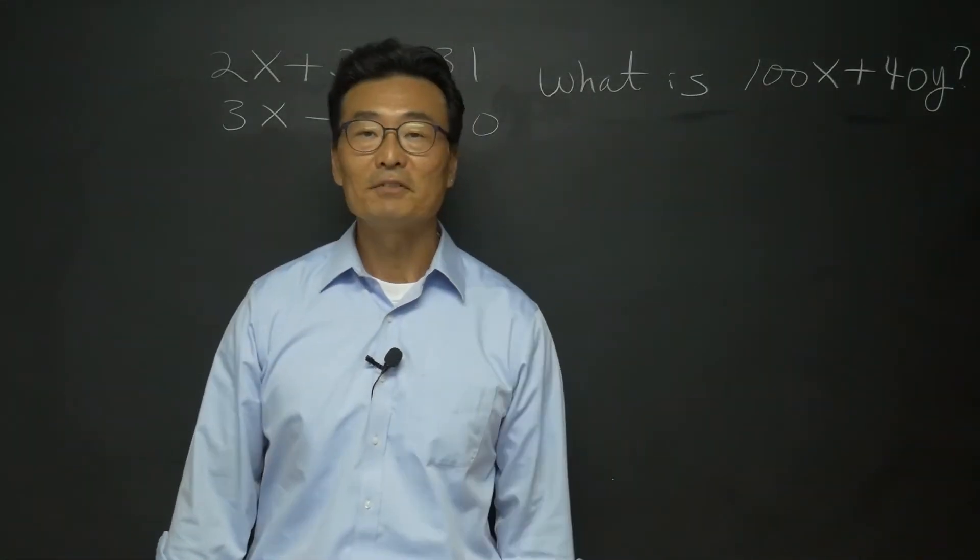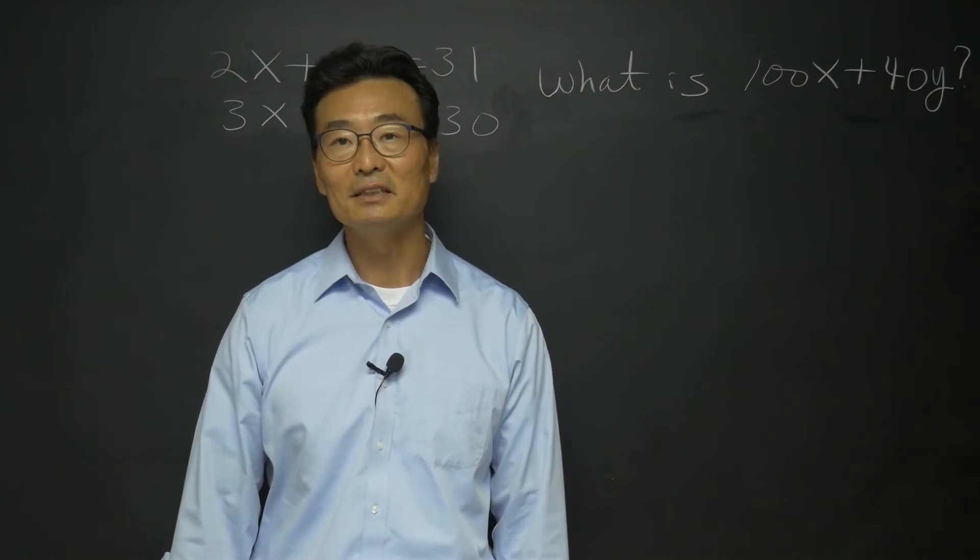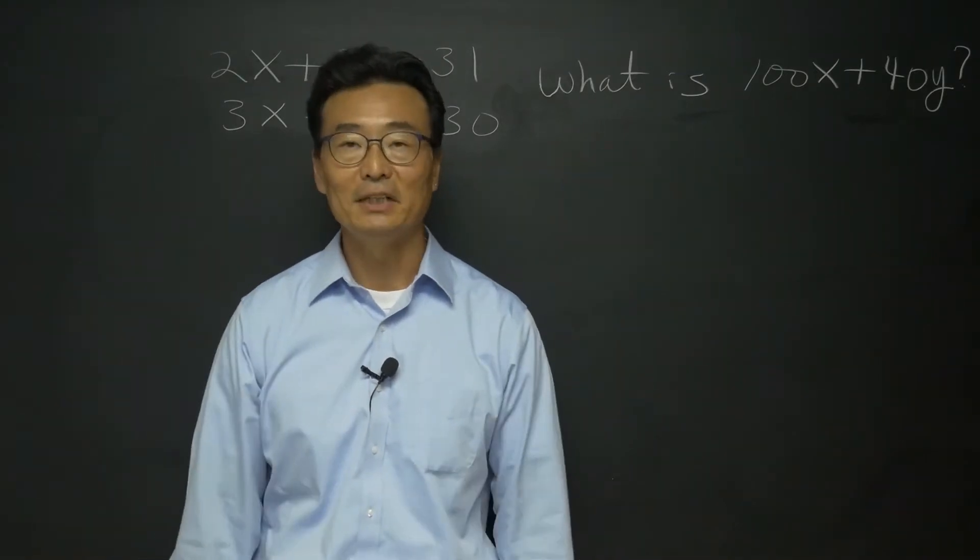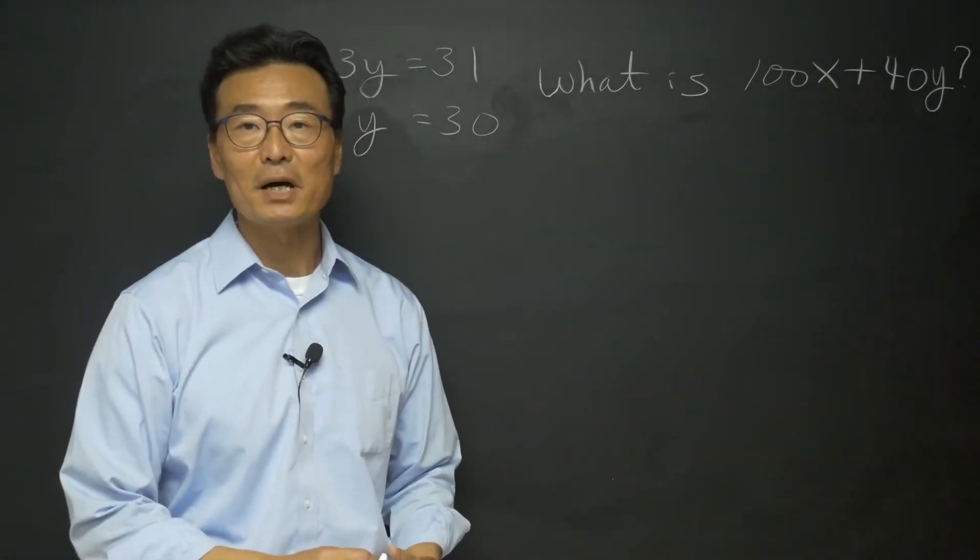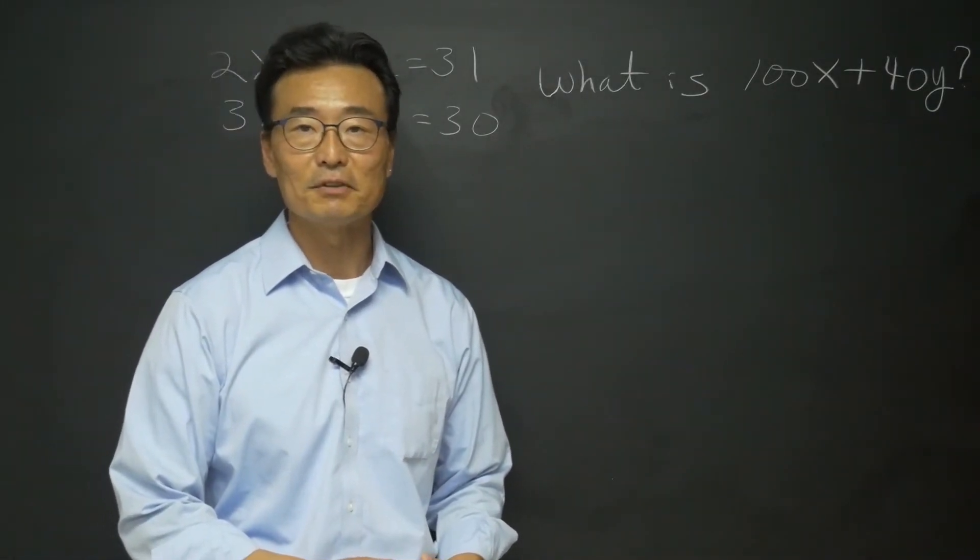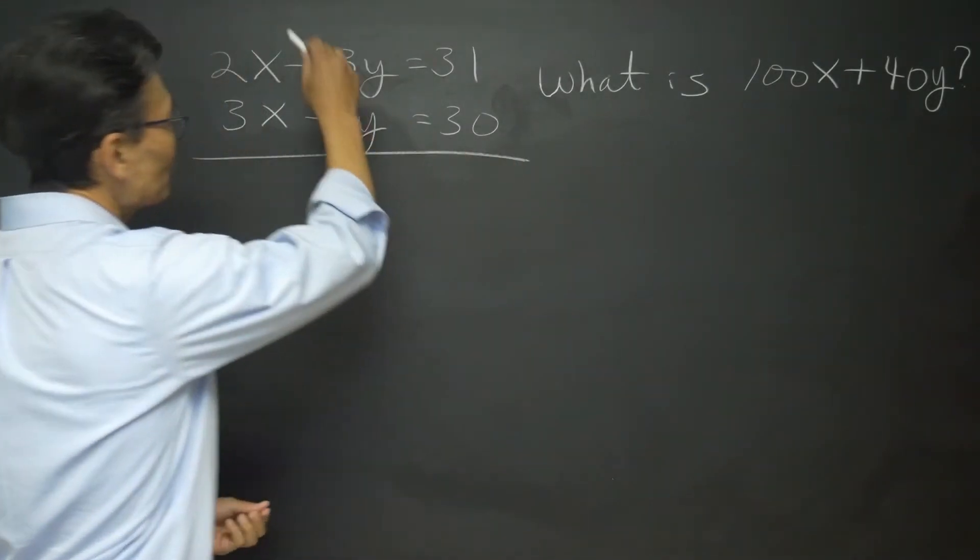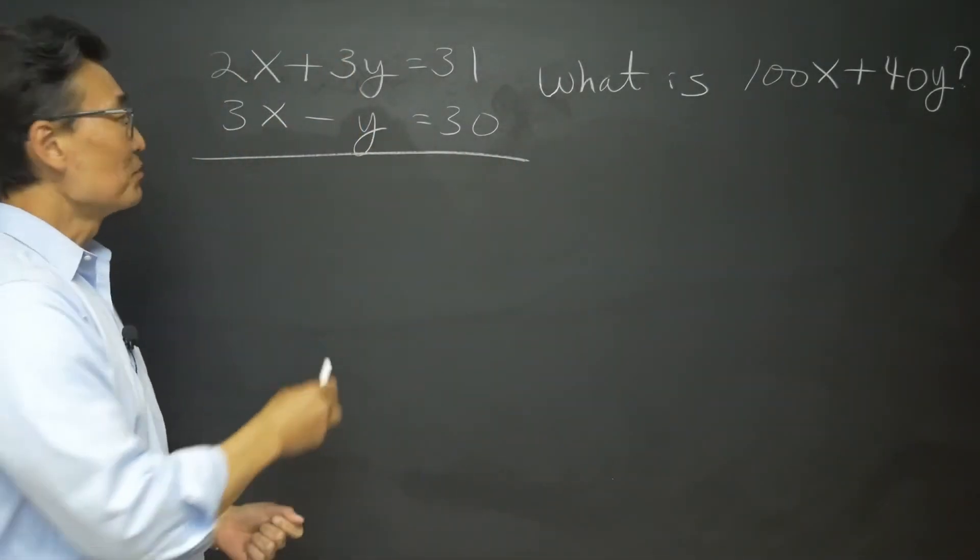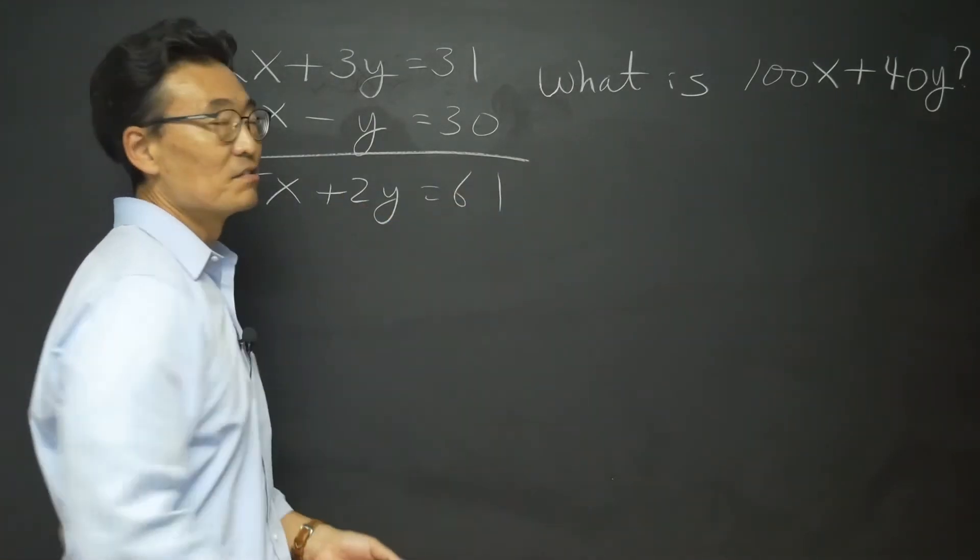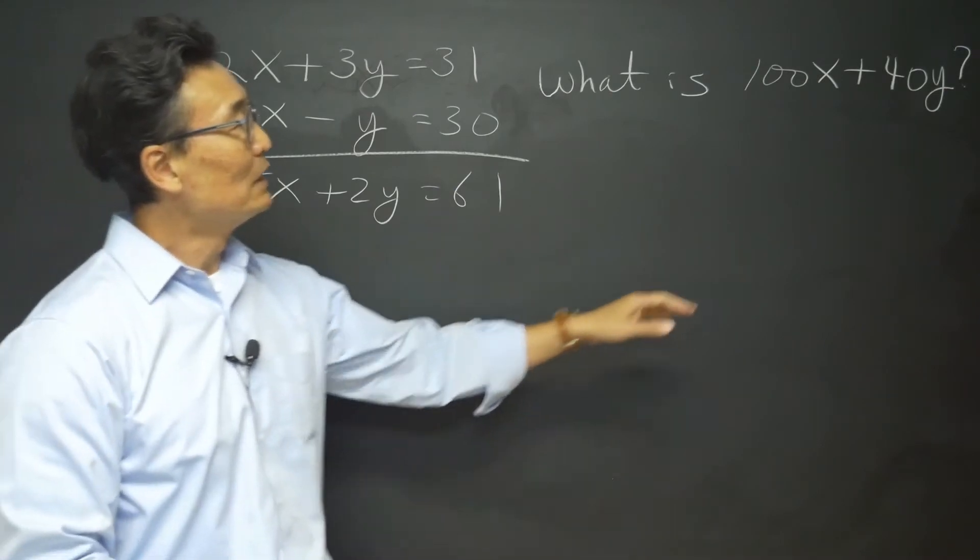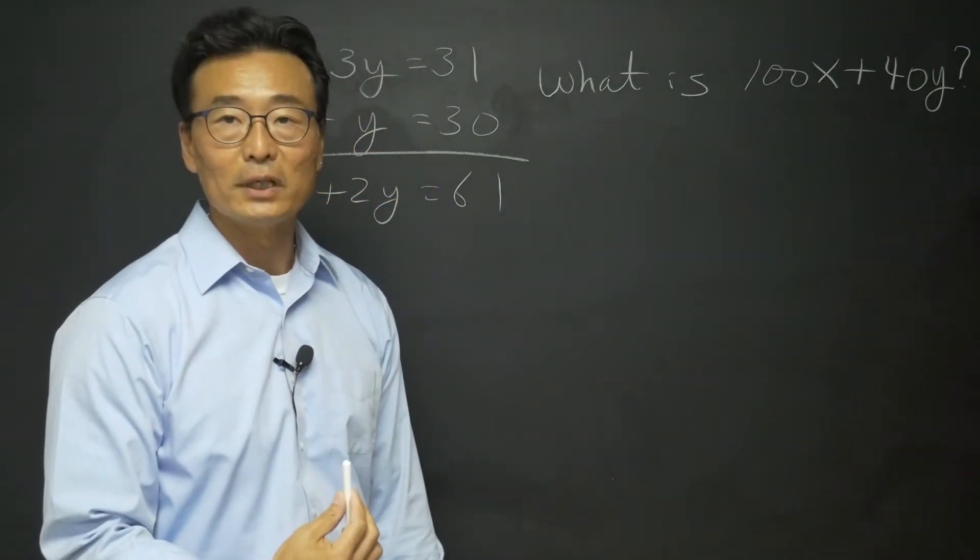So let me erase this and show you the SAT method to get the question done much quicker. All right, here we have the same question. This time I'm going to be doing it the SAT way, meaning the quicker way to get the question done as quickly as possible and save us some time. First of all, I'm just going to go ahead and add up and down. Let's see what happens. We get 5x plus 2y is 61. Also, from the 100x plus 40y, let's go and take out a 20, meaning factor of 20 out, so it becomes 20 times 5x plus 2y.